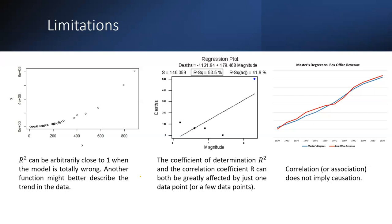R-squared has limitations. If R-squared is insufficient, we go for other tests like the t-test and F-test. R-squared can be arbitrarily close to one even when the model is totally wrong, meaning another function might better describe the trend in the data. Also, the coefficient of determination R-squared and the correlation coefficient R can both be greatly affected by just one or a few data points. Importantly, correlation or association does not imply causation — we need to identify which variable is causing the effect.